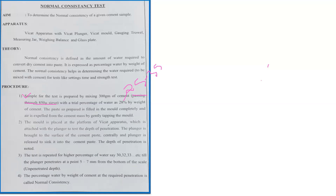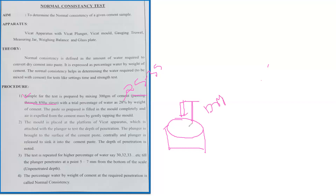The plunger is brought to the surface of the cement paste centrally and then released to sink into the cement paste, and the depth of penetration is noted. If the water content is less, the mix will be in a harsh, dry condition and it will be very tough for the plunger to penetrate. So the test is repeated with a higher percentage of water — from 28 to 30, 32, 33, and so on.